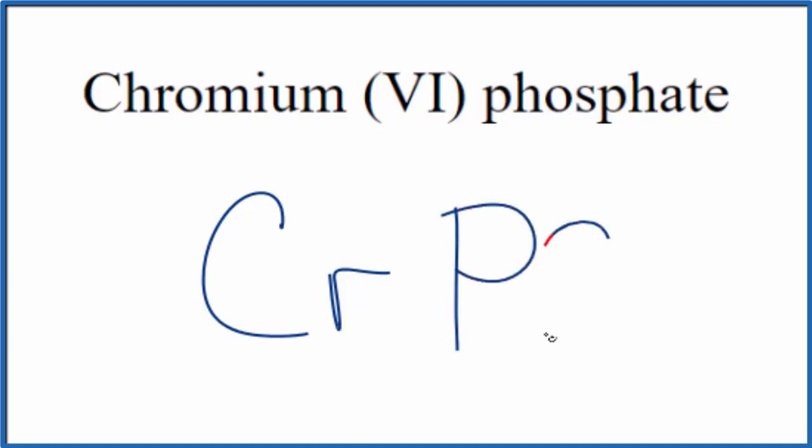PO4 is the phosphate ion and the whole thing has an ionic charge of 3-. When we look at chromium here, we're told that we have this 6, so we have 6+ here. And these need to add up to 0, give us a net charge of 0.